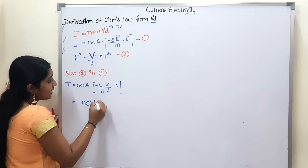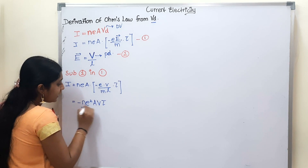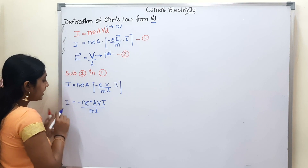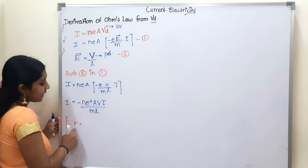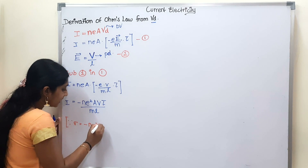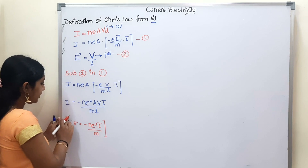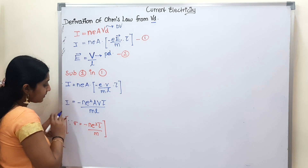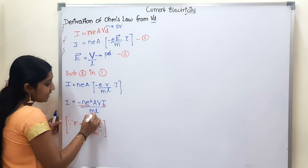Continuing the simplification: E into E gives e squared. With tau divided by m into L, we get the current formula. We know the sigma (conductivity) formula: sigma equals n·e²·tau divided by m. So the current becomes I equals sigma times A into V divided by L.